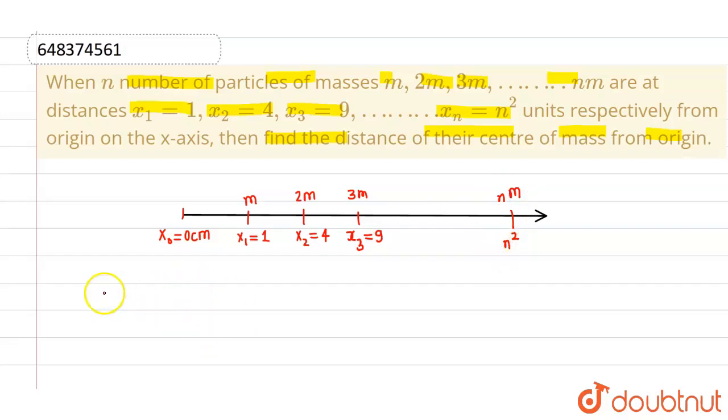The coordinates of center of mass will be given by (x_com, 0). Since all the particles are on the x-axis, the y-coordinate will be 0. Now in this particular case, the x-coordinate will be given by each mass into its distance from the reference. I am taking this particular point as reference, so